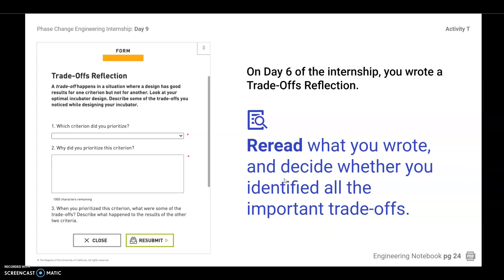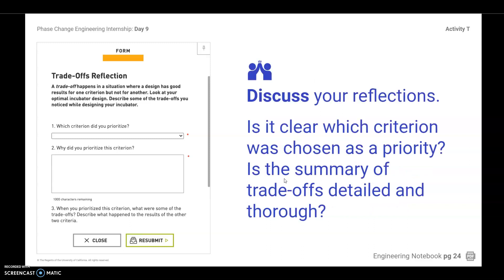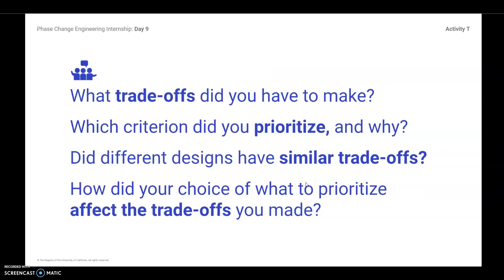Pause the video here so that you can do that. Now that you have reread them, discuss your reflections with your group. Is it clear which criterion was chosen as a priority? You can do this with your shoulder partner. Is the summary of the tradeoffs detailed and thorough? Pause the video here to discuss — 30 seconds, go. What tradeoffs did you have to make? These are the things you should be asking yourself as you write the final conclusion: Which criteria did you prioritize and why? Did different designs have similar tradeoffs? How did your choice of what to prioritize affect the tradeoffs you made? Pause the video and take two minutes to discuss these questions, and be prepared to write them in your conclusion.